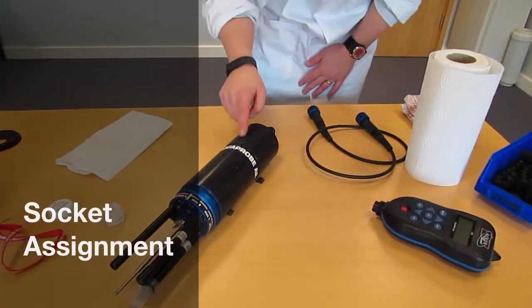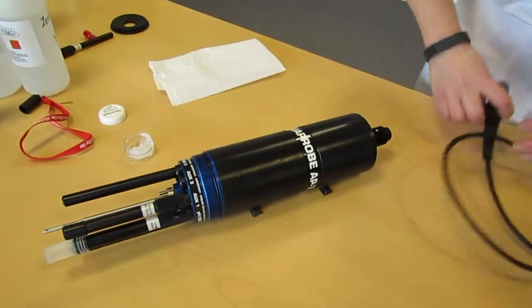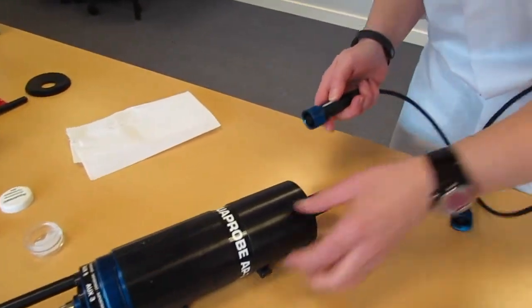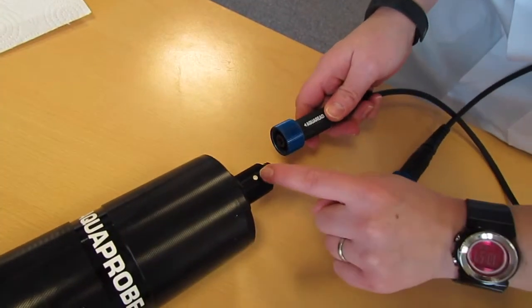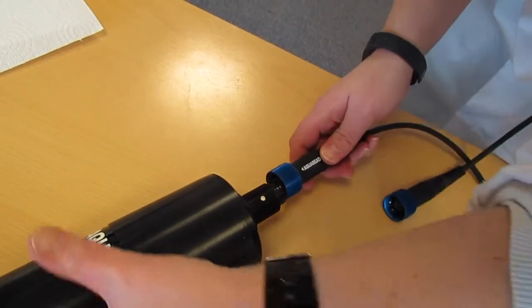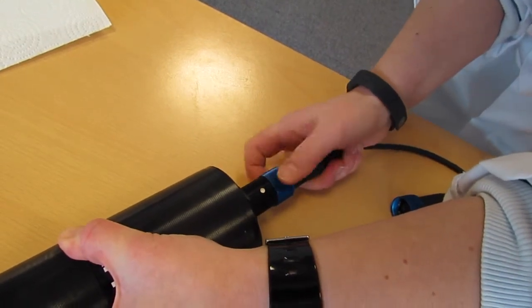Now we need to tell the probe that it has the turbidity electrode installed into the AUX1 socket. We take the lead and connect it to the probe. The aqua-read symbol must be facing up and it lines up with the white dot on the probe. Push this firmly into the probe and screw down the blue collar.